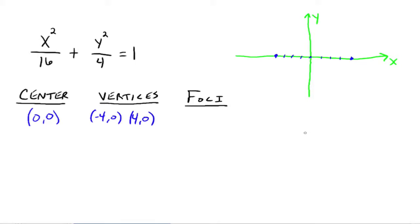To get to the endpoints for the minor axis, since the smaller number is under the y squared, we go up and down from the center — the square root of 4, which is 2. Those are the four points we need, then you just make it look like an ellipse. It's very similar to graphing a circle; you're just elongating it a little bit.